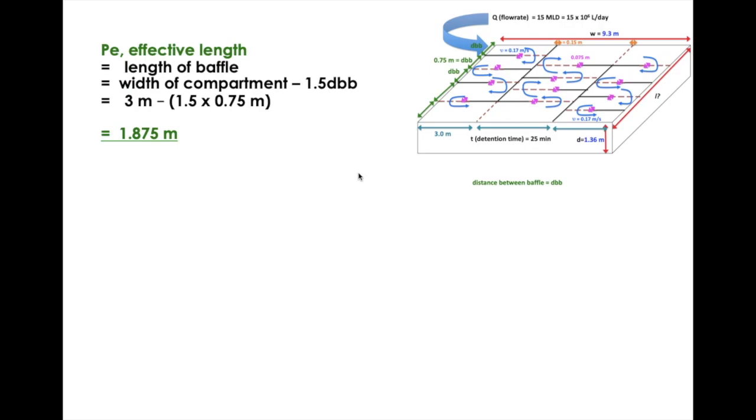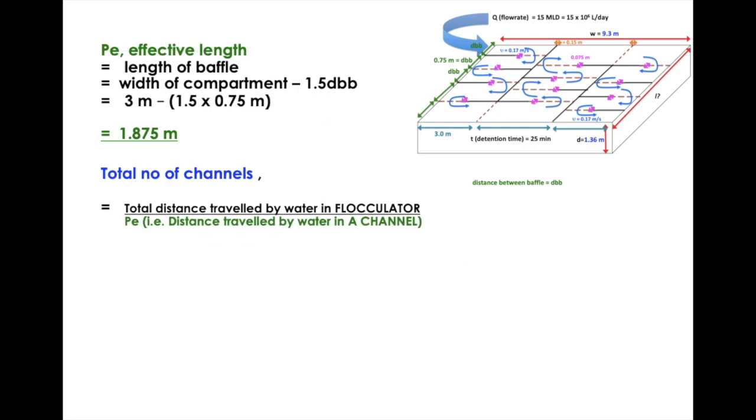Now we would like to find out the number of channels, the total number of channels in this flocculation tank. The total number of channels is simply total distance traveled by water in flocculator divided by PE. So 255 meters divided by PE 1.875 meters gives us 136 channels. That is the total number of channels in this flocculation tank.